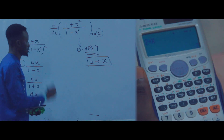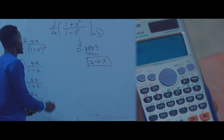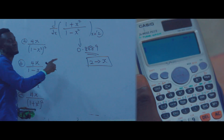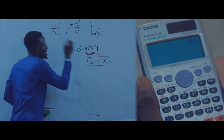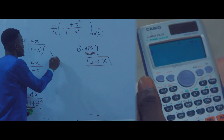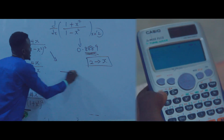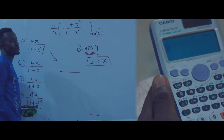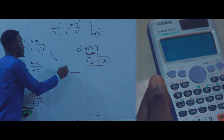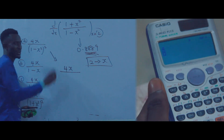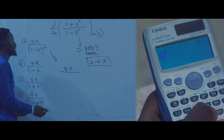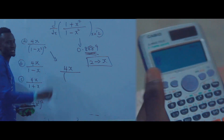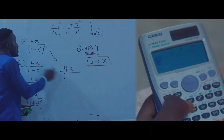Now let's go to the options. The option that gives the same value as 0.8889 is the right answer. Go to option A: press the fraction button, come to the numerator, press 4, then press alpha X.